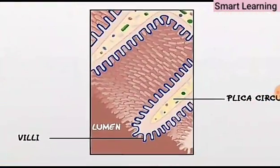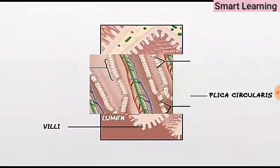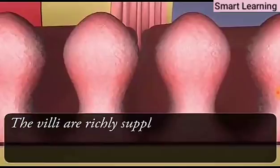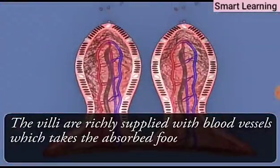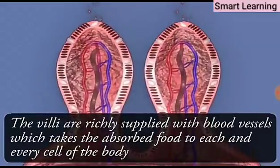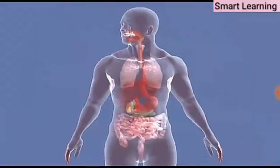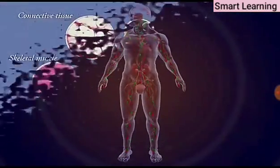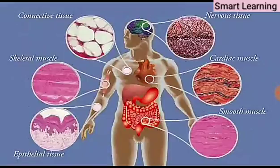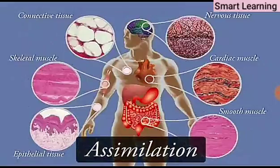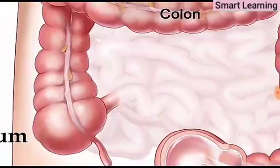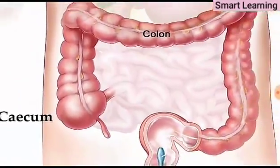The inner lining of the small intestine has numerous finger-like projections called villi, which increase the surface area for absorption. The villi are richly supplied with blood vessels that take absorbed food to each and every cell of the body. In the cells, nutrients are utilized for obtaining energy, building up new tissues, and repair of old tissues — a process known as assimilation. The small intestine is followed by the large intestine.